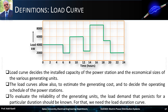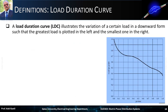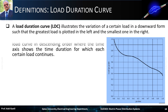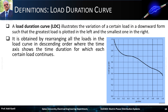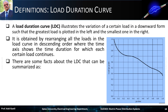To evaluate the reliability of the generating units, the load demand that persists for a particular duration should be known. A load duration curve illustrates the variation of a certain load in a downward form, such that the greatest load is plotted on the left and the smallest on the right. It is obtained by rearranging all the loads in the load curve in descending order, where the time axis shows the duration for which each certain load continues.